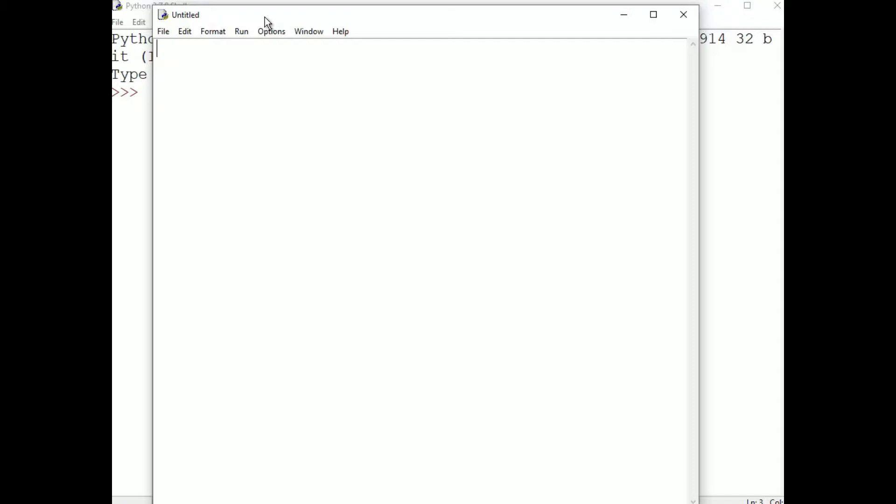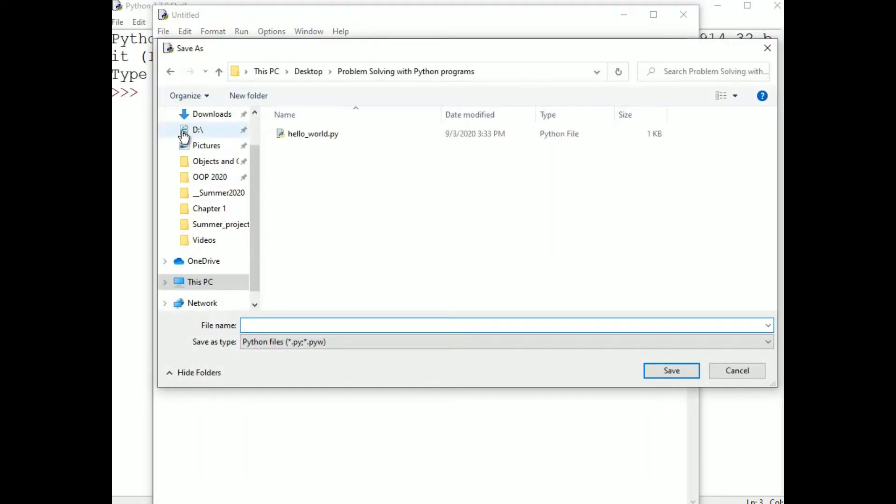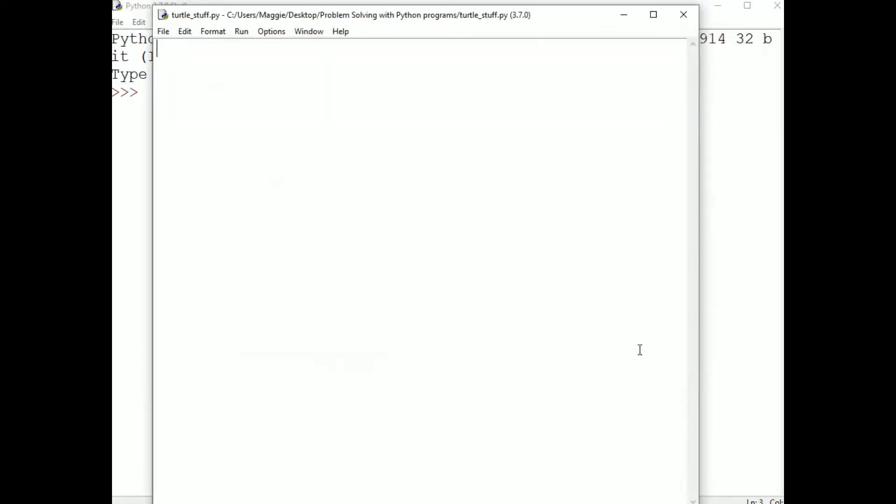Now we're going to save our file immediately. You want to be very careful not to save your script with a name that is used by Python. I'm going to suggest a name for you. Let's call this Turtle_Stuff. Do not call any program Turtle, because if you do that you will basically be hiding the Turtle Graphics module from Python. If you accidentally call a program Turtle, quit Python and restart it and give your program a different name.